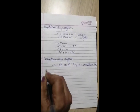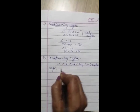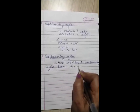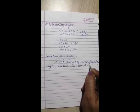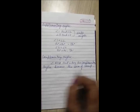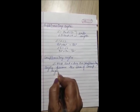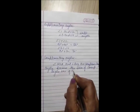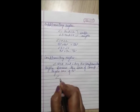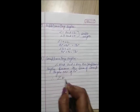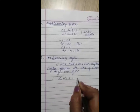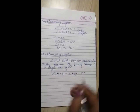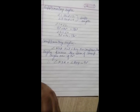Complementary angles means the sum is 90 degrees. Therefore, angle MOA plus angle AOY equals 90 degrees.